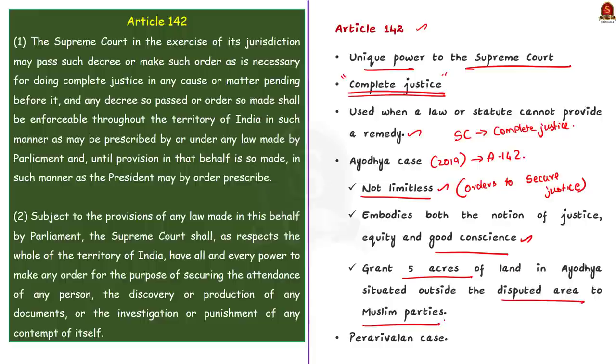If you have carefully listened to our daily news analysis, you should have known that last month, the Supreme Court used these powers under article 142 to release Perarivalan, who is a convict of Rajiv Gandhi assassination. This is about article 142 and some examples in which the Supreme Court used this article to provide complete justice.